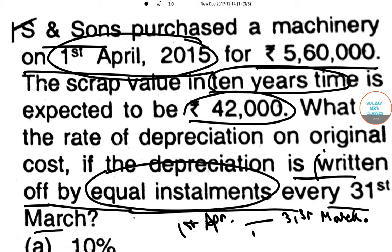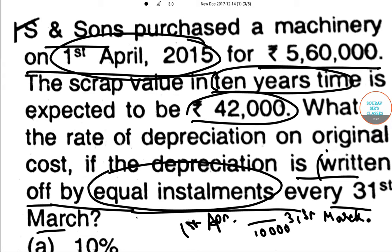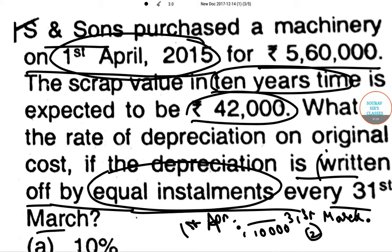Equal installments means: if in year 1 the depreciation is ₹10,000, then in the second year it will also give us ₹10,000. So this method is the Straight Line Method (SLM), in which we charge the same percentage every year and deduct it each year until its value is fully written off.